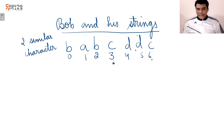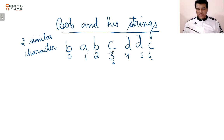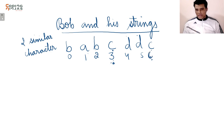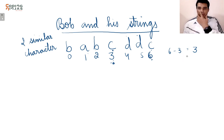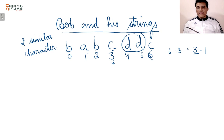I need to find the maximum distance between two similar occurrences. The maximum distance is between C and C. C is at index 3 and this C is at index 6, so I compute 6 minus 3 which equals 3. But I didn't have to print 3 — I had to print 3 minus 1, counting the number of characters between them.